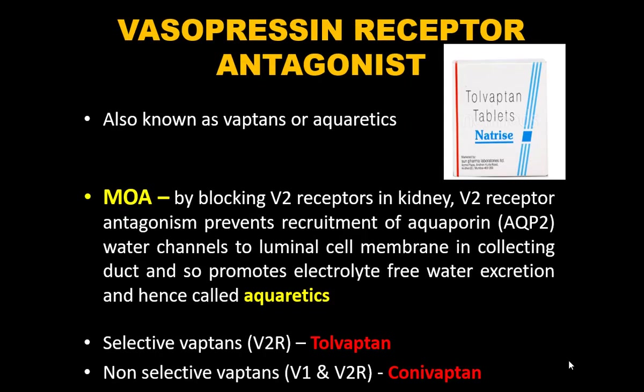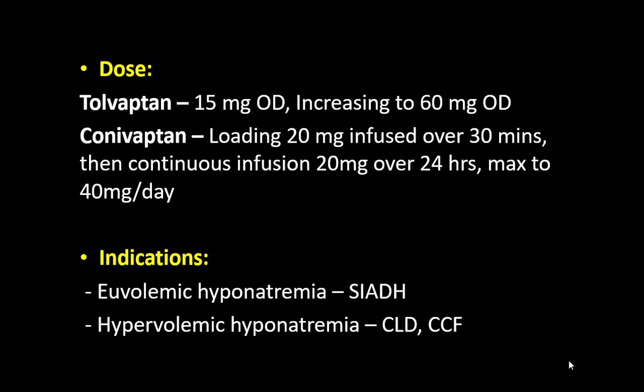Vasopressin receptor antagonists — also known as vaptans or aquaretics — include selective (V2) and non-selective types. The selective V2 blocker is Tolvaptan, available as a tablet. The mechanism is blocking V2 receptors in the kidneys, preventing recruitment of aquaporin water channels, thus promoting electrolyte-free water excretion. The dose starts at 15 mg OD and can be increased up to 60 mg OD.